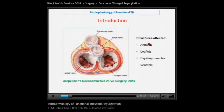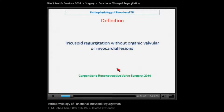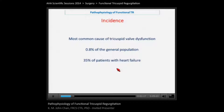Pathology in any of these structures can cause tricuspid regurgitation, and for competency of this valve it involves coaptation of the leaflets, which is influenced by all of these structures. Functional TR is defined as tricuspid regurgitation without organic valvular or myocardial lesions. It is the most common cause of tricuspid valve dysfunction — not so common in the general population, but very common in patients with heart failure, particularly those with mitral valve disease, where it is present in up to a third of patients.